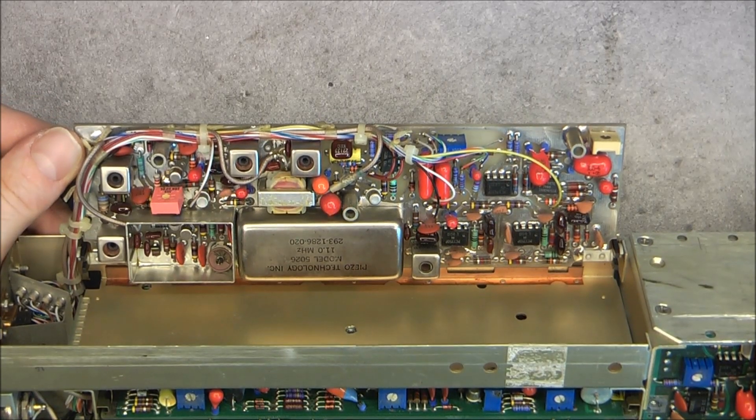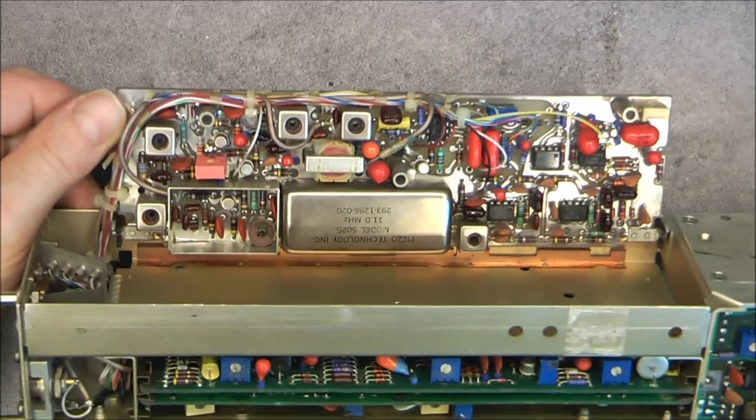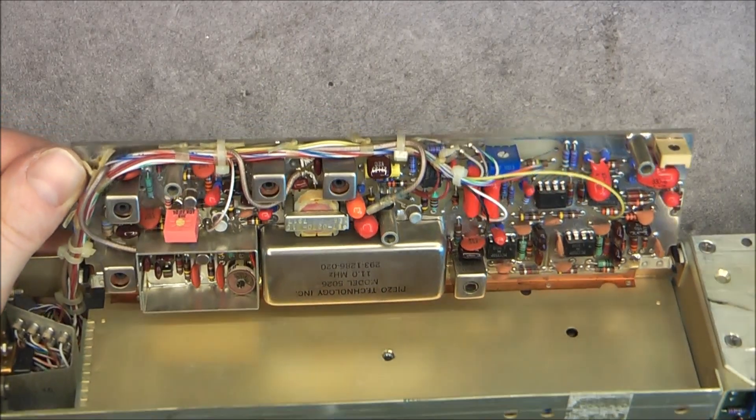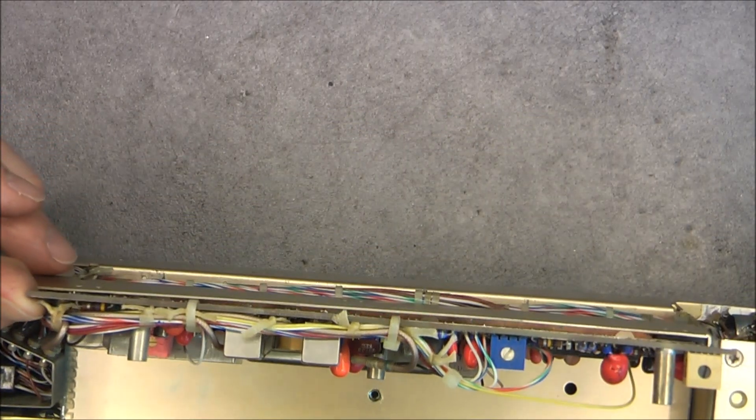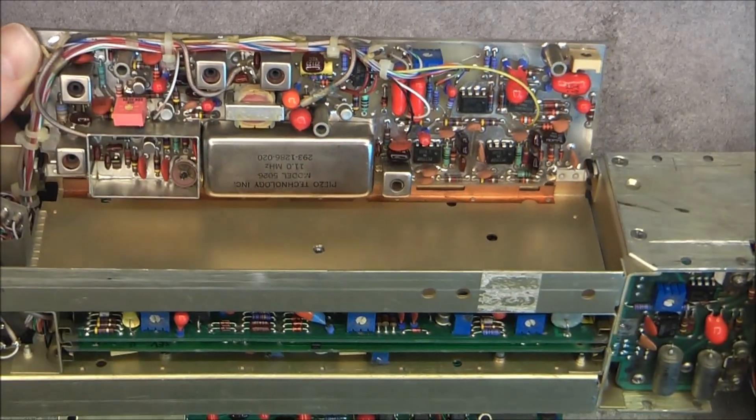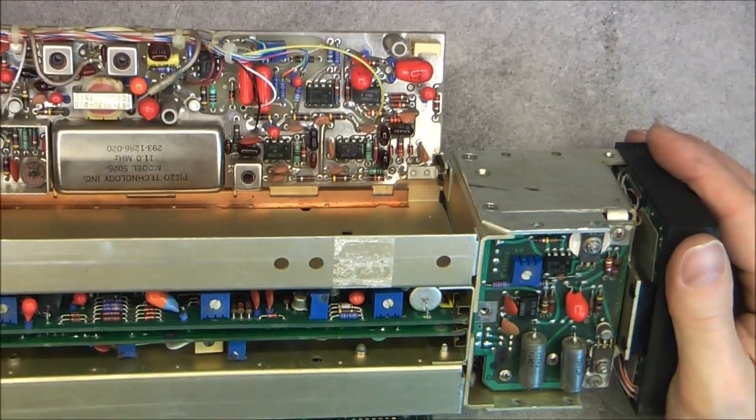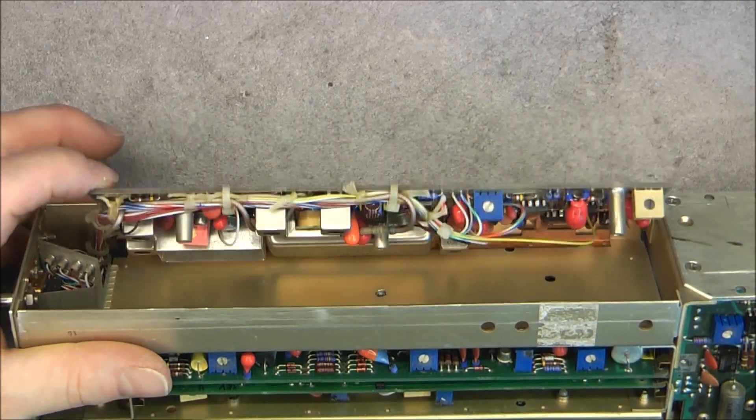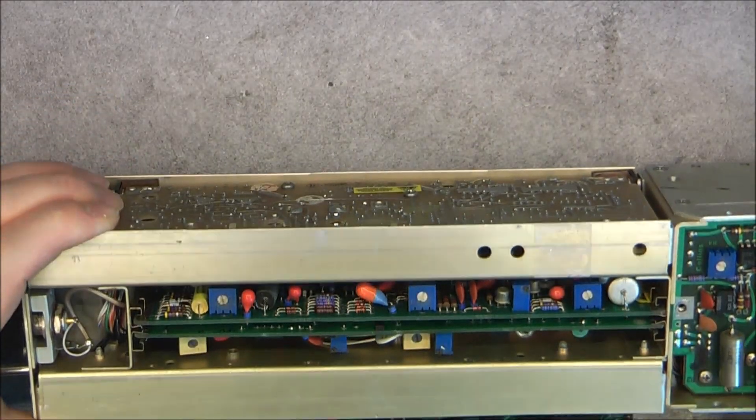And you can see old-school electronics. No conformal coating on these boards by the way. And you can see the construction is made of several pieces of folded aluminum. Okay, I will put this back together and we will have a look at the front section.